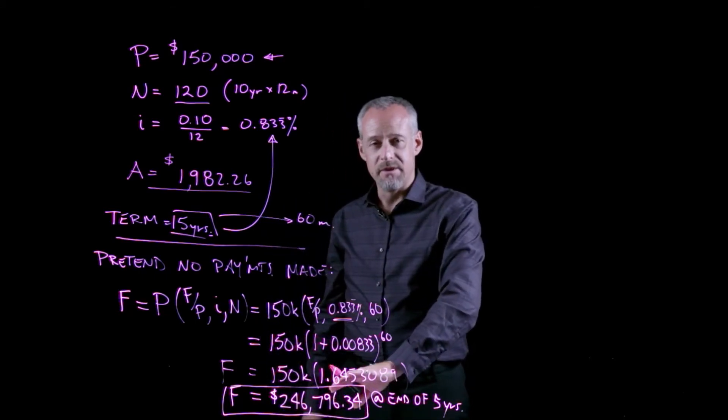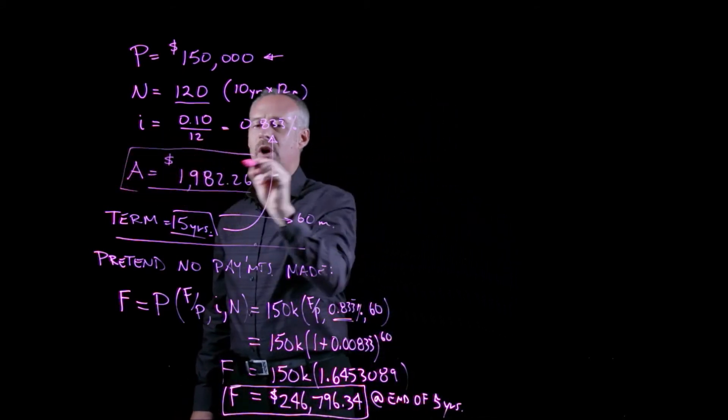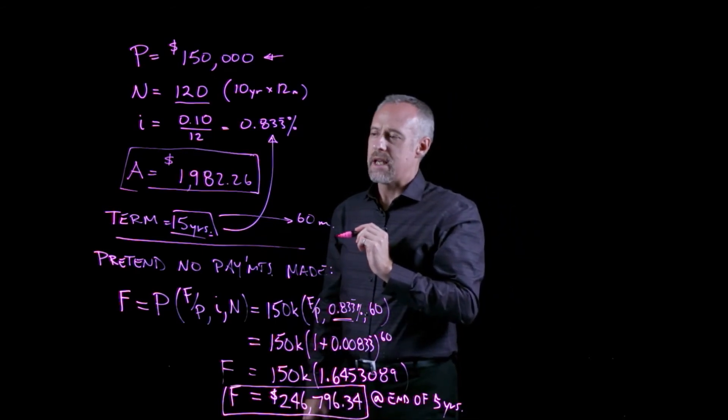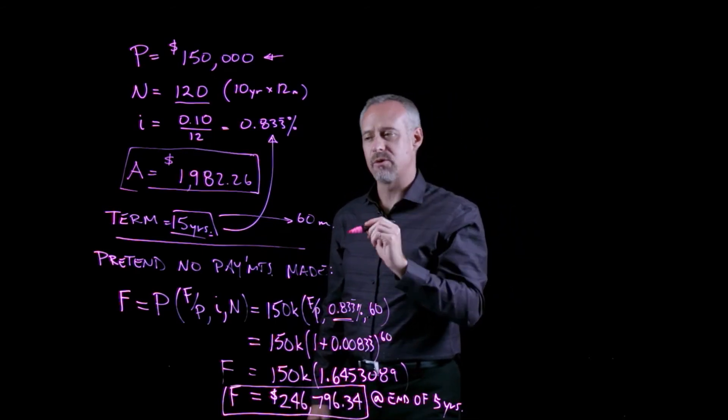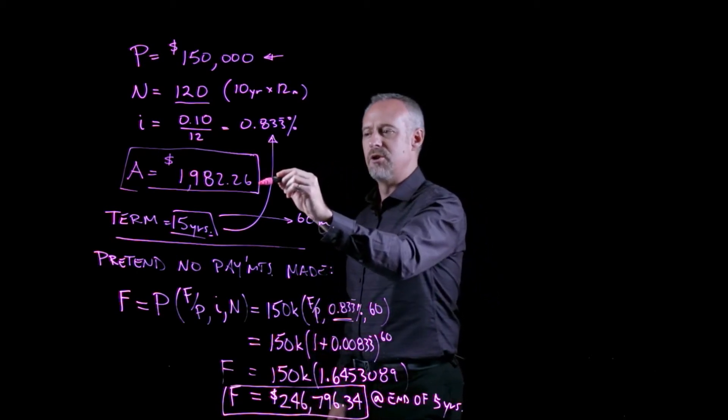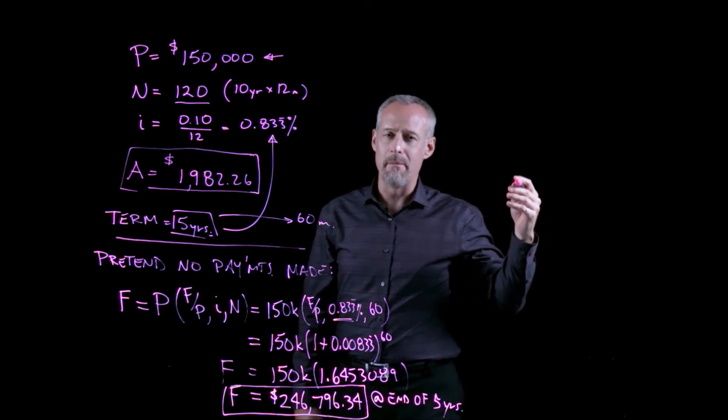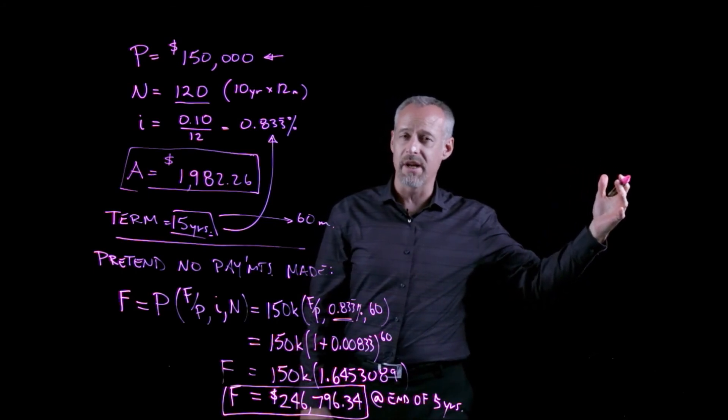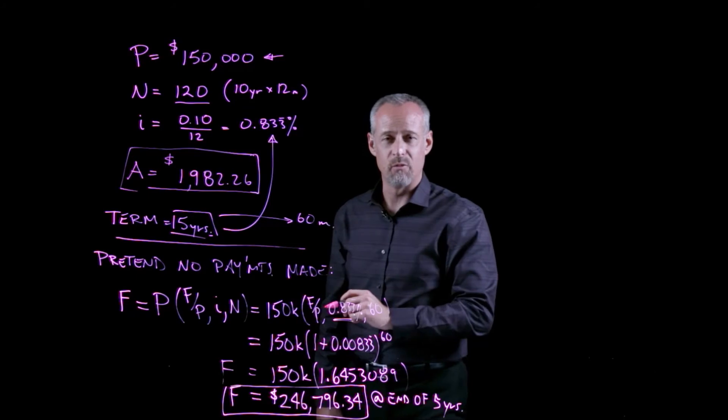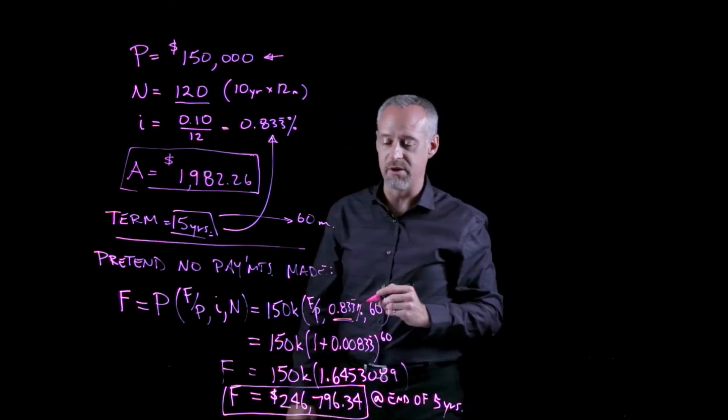However, I know that this person did in fact make their monthly payments. From the first part of this problem, I know they paid $1,982.26 every month. If I know what they paid and the interest rate every month, then I can calculate the future value of the annuity over 60 months. Whatever that future amount equals would be the amount paid towards both interest and principal. If I take that amount and subtract it from the uncontrolled growth with no payments, I will end up with the amount still owing on the original $150,000.